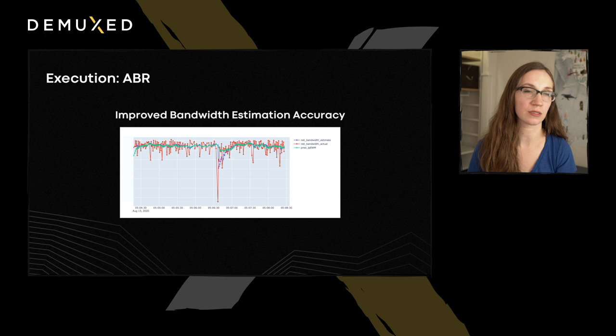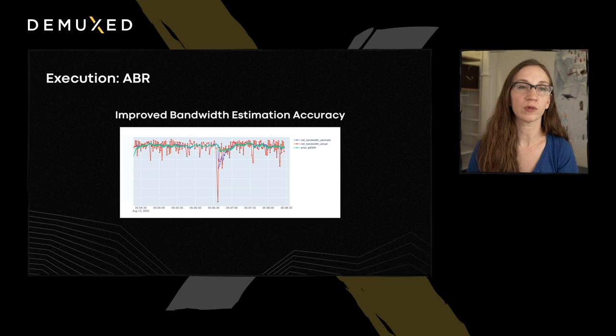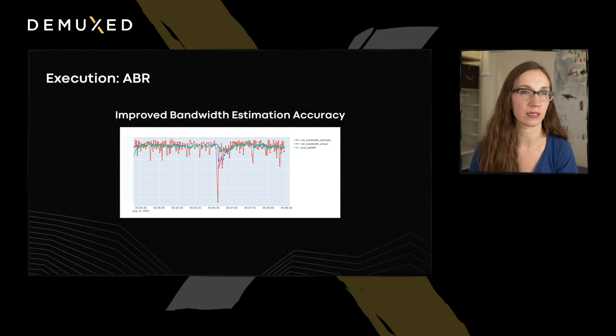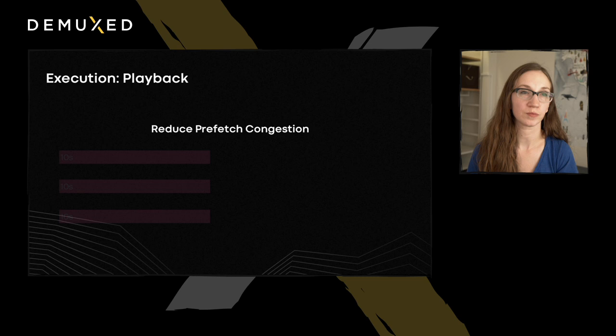Bandwidth estimation is a critical component of our ABR decisions. One problem we observed was that a single slow, anomalous request could pull down our average too steeply and result in too much content being played at a low bitrate lane. We collaborated with our infrastructure data science team to adjust our bandwidth estimation algorithm to reduce the impact of outliers. Where we might have a graph of bandwidth samples with one very slow request, traditionally it would take a number of seconds to rebound and gradually realize network conditions had improved. By reducing the impact of outliers, we can speed up that rebound and jump back to higher qualities more quickly.